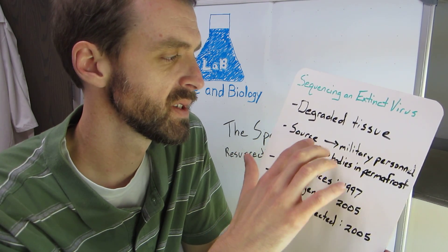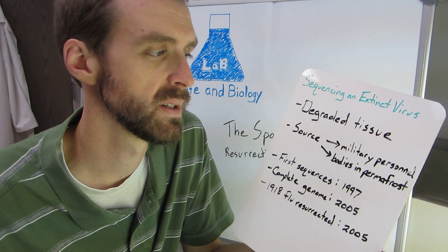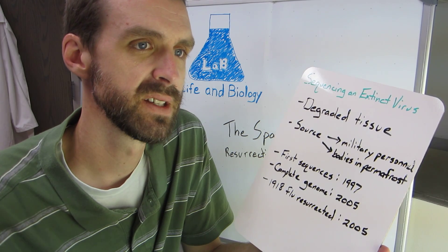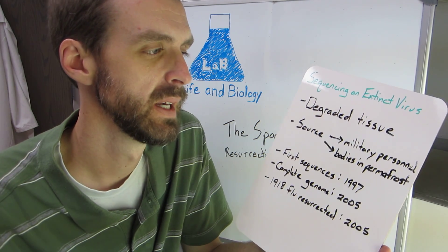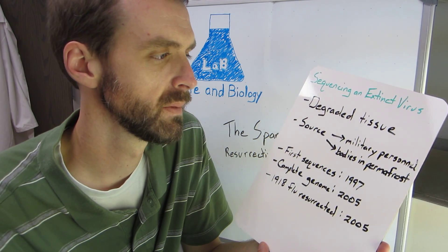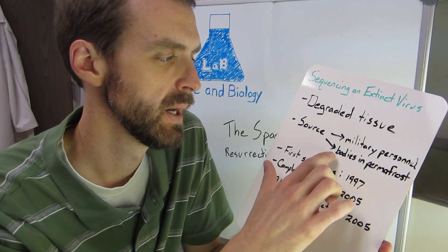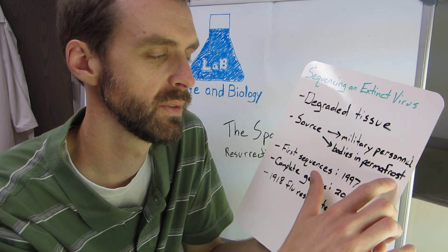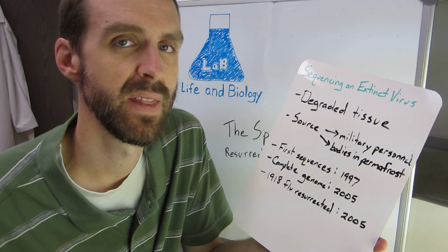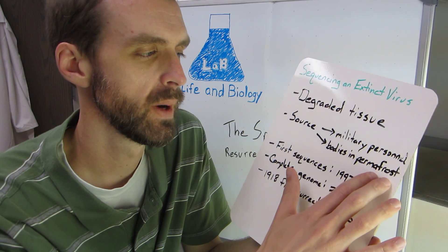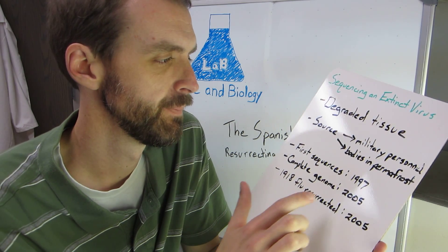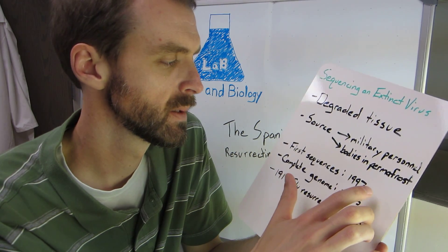Examples of sources include military autopsies on personnel who had died from the flu — the fixed tissue was archived, so they were able to go back into that archived material and get the genetic sequence. Also, in Alaska, in the permafrost where it's frozen constantly, bodies in that environment had tissue preserved well enough to get some sequences from those samples.